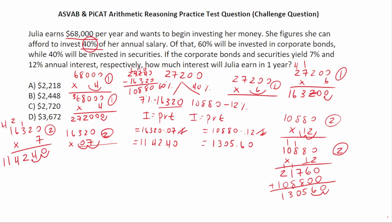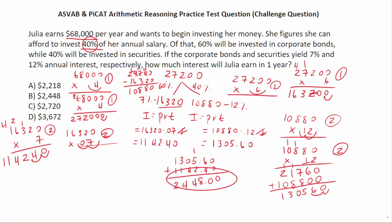Let's add these two things together to find out how much interest she's going to earn in total. This is going to be 1,305.60 plus 1,142.40. 6 and 4 is 10, carry a 1. Bring down our decimal. Adding the rest: the result is $2,448 in total interest, which is answer choice B. If you see a question like this on the ASVAB, it means you're going to be getting close to a very perfect score.